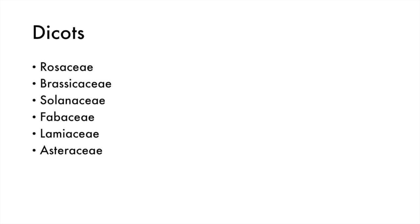This brings us to dicots — these are eudicots, which are a monophyletic lineage. There are a number of families of flowering plants that are considered basal or ancestral types of dicots, which are not included here, but all of these fall within a monophyletic clade called the eudicots.